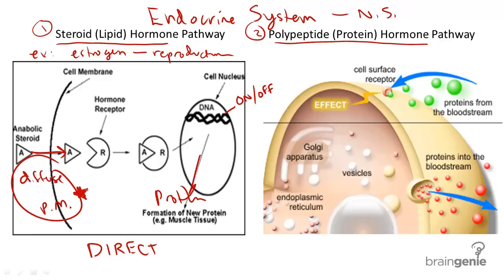Amino acid hormones that make up these protein hormones include one major example: insulin. Insulin controls blood sugar.